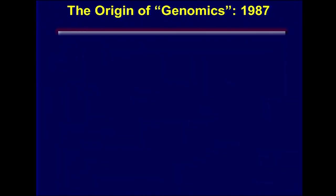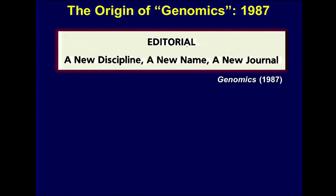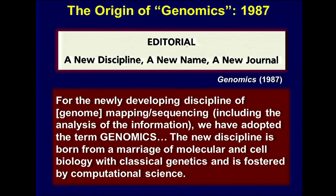I did a little digging to figure out when was the first usage in the scientific literature of the word 'genomics,' and it turns out the origin truly was 1987 — the year I graduated. What I could find was the first use came with the creation of a new journal called Genomics. The opening editorial stated: 'For this newly developing discipline of genome mapping and sequencing, including the analysis of the information, we have adopted the term genomics. The new discipline is born from a marriage of molecular and cell biology with classical genetics and is fostered by computational science.'